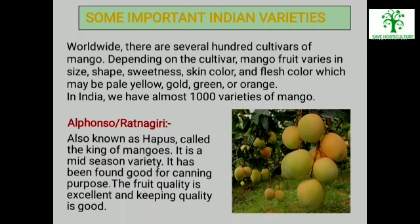Alphonso or Ratnagiri, also known as Hapus: Alphonso is widely known for its sweetness, richness and flavor, and has been called the king of mangoes. It is a mid-season variety and has been found good for canning purpose. The fruit quality is excellent and keeping quality is good.